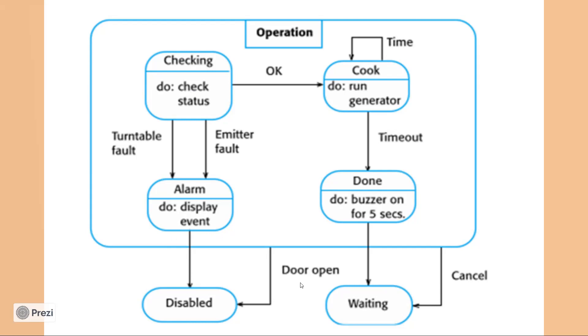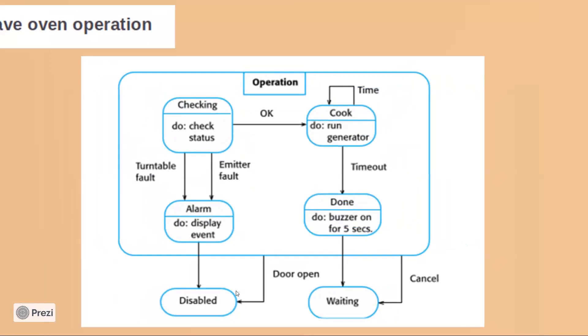If you open the door mid-cooking, you go into the disabled state — you cannot cook at that point. So this completes the microwave oven state transition diagram. Another example that can also be a state transition diagram is a chess game — it's quite simple.